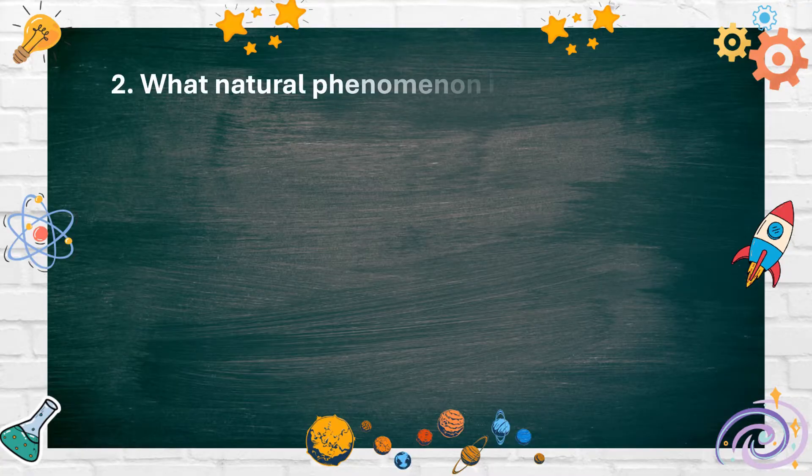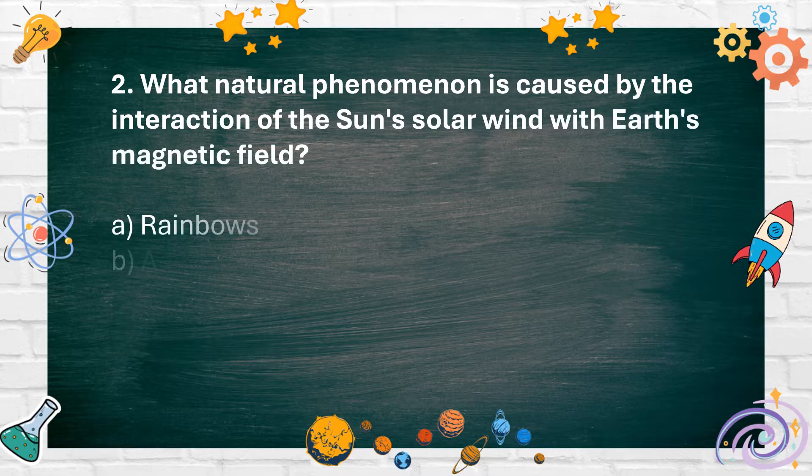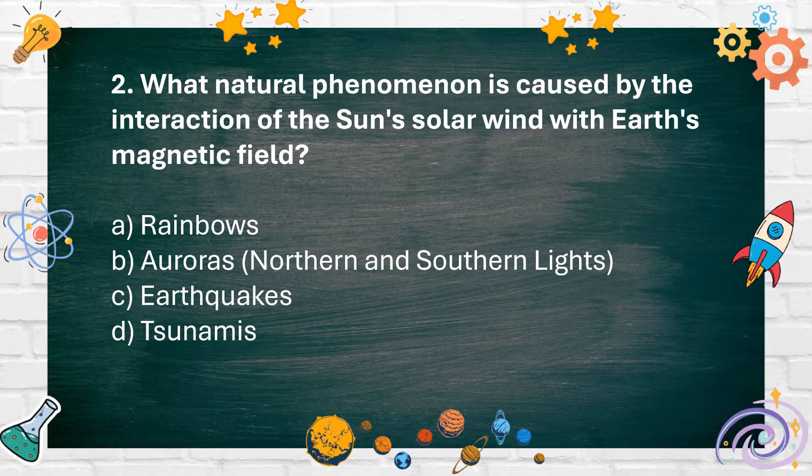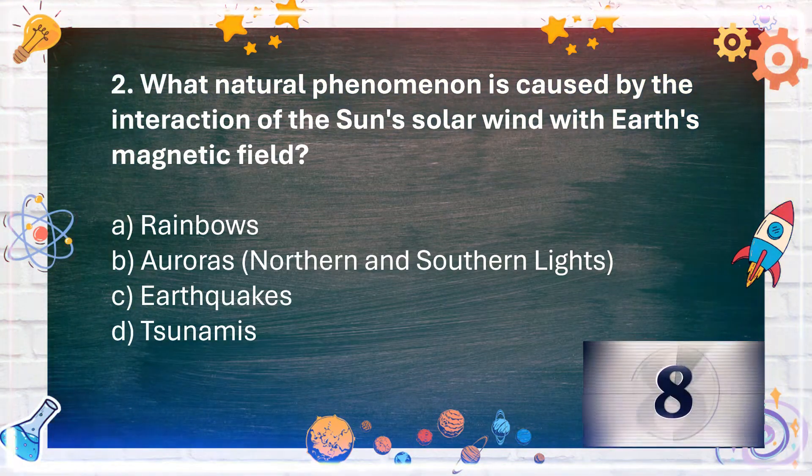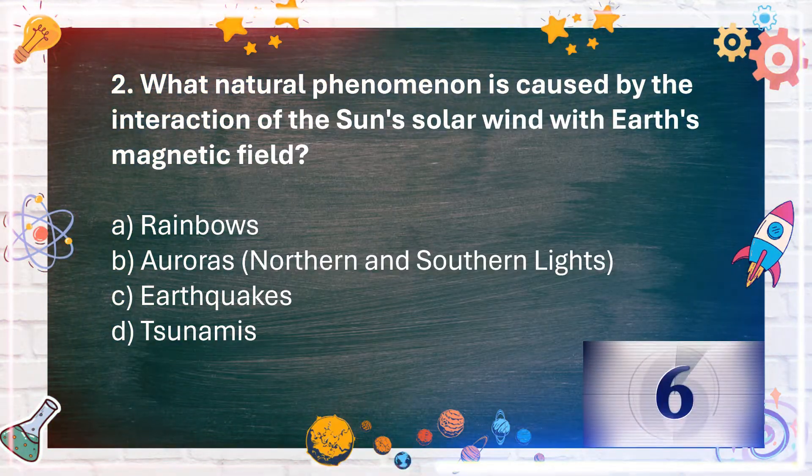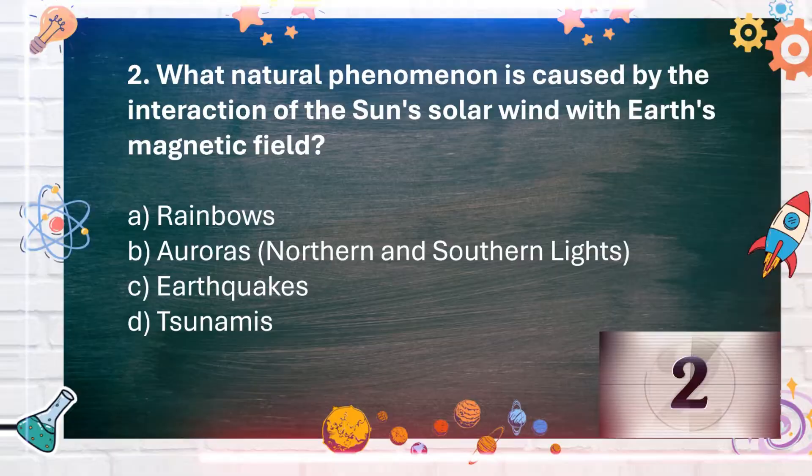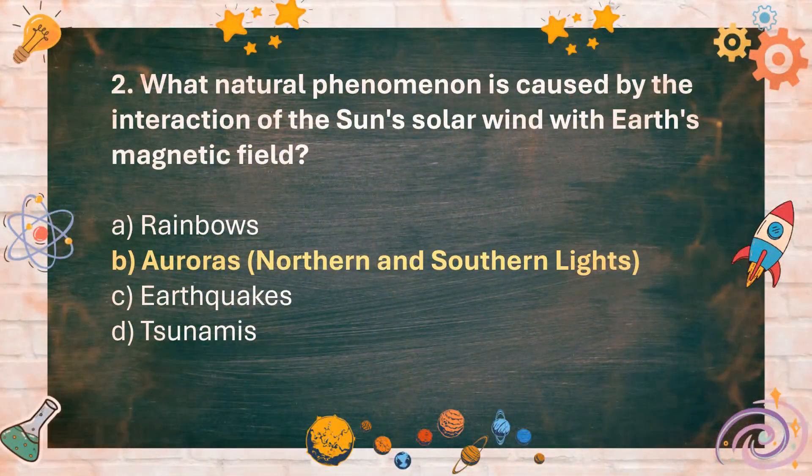Number 2: What natural phenomenon is caused by the interaction of the sun's solar wind with Earth's magnetic field? A. Rainbows, B. Auroras (Northern and Southern Lights), C. Earthquakes, D. Tsunamis. The answer is B. Auroras, Northern and Southern Lights.